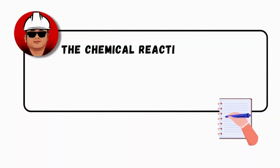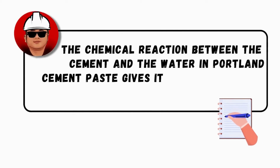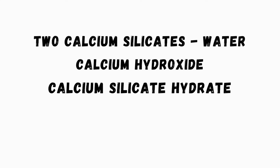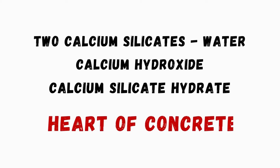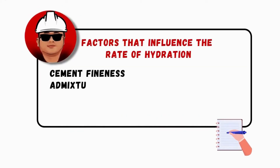Hydration is the chemical reaction between the cement and water in Portland cement paste that gives it its binding properties. The two calcium silicates react with water to form two new compounds: calcium hydroxide and calcium silicate hydrate. The engineering properties of concrete depend primarily on calcium silicate hydrate — it is the heart of concrete. And these are the factors that influence the rate of hydration.